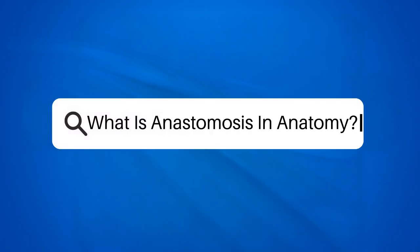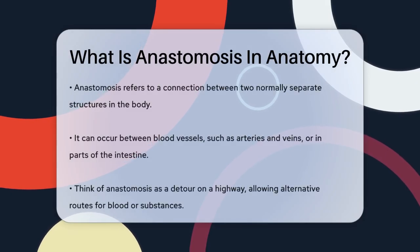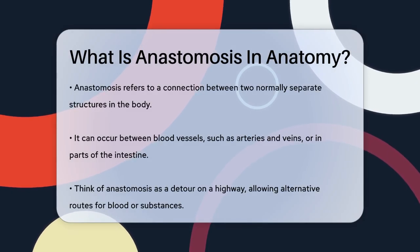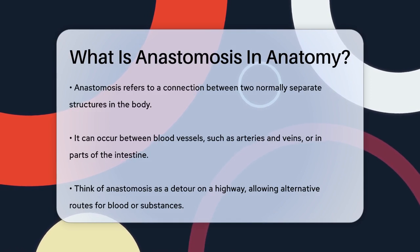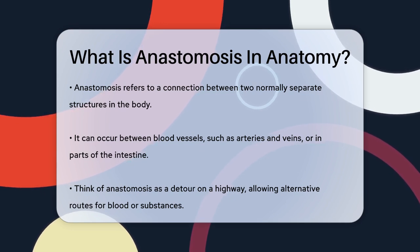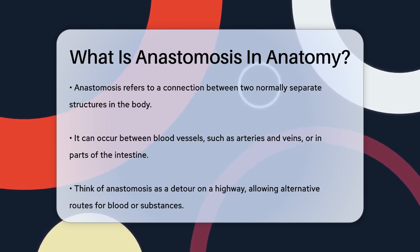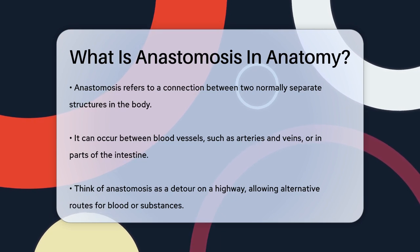What is anastomosis in anatomy? Have you ever wondered how our bodies manage to keep everything running smoothly, even when one part is blocked or damaged? The answer lies in a fascinating concept called anastomosis. Anastomosis is essentially a connection or opening between two structures that are normally separate — this can happen between blood vessels like arteries and veins, or even between different parts of the intestine.